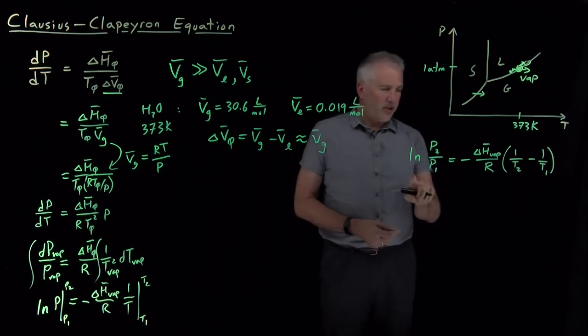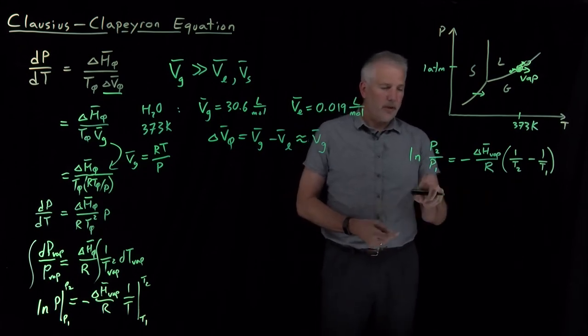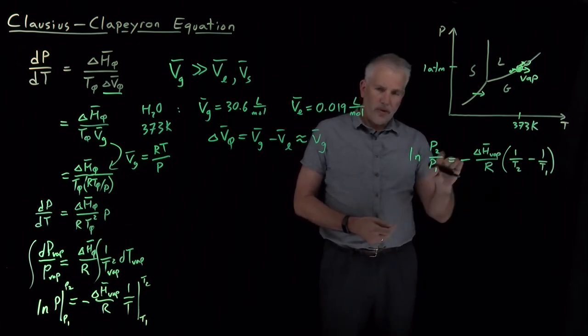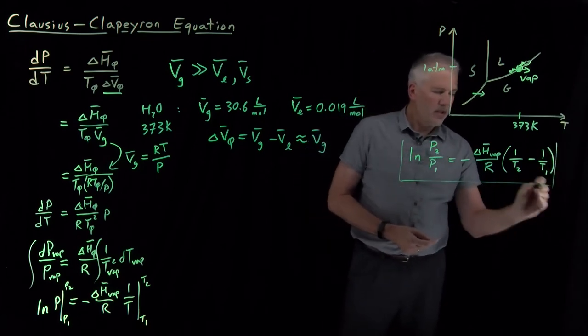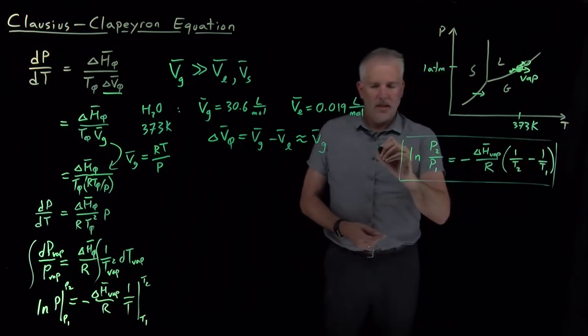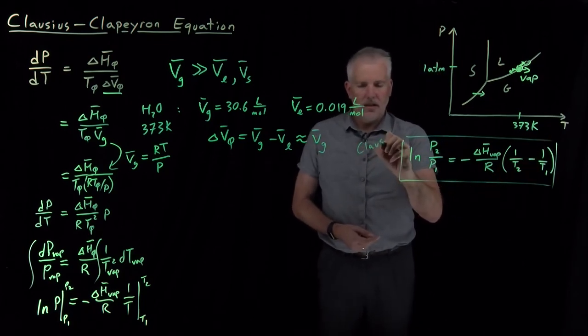All right. So, that equation is actually in a form that's perfectly valid that we can use many times. I'll rewrite it in a couple of different forms that are also useful. But that equation, if I put that in a box, that is an equation that we call the Clausius-Clapeyron equation.